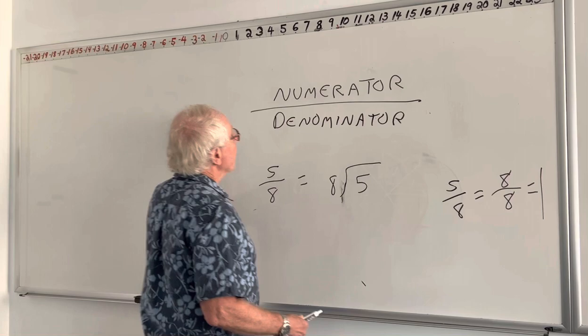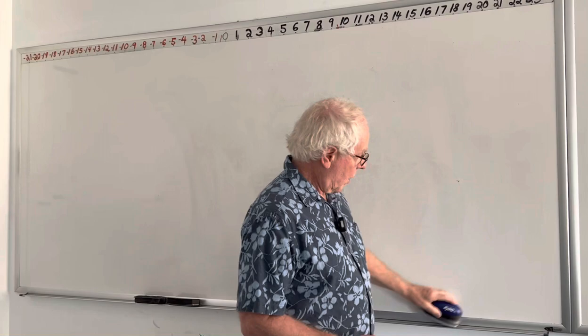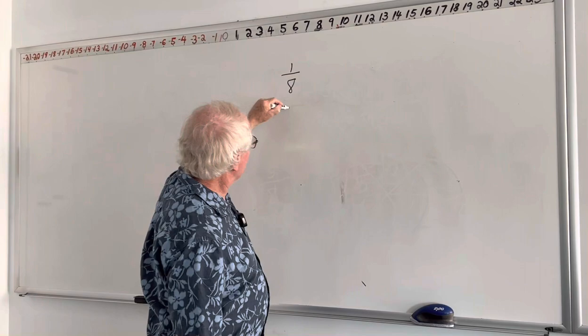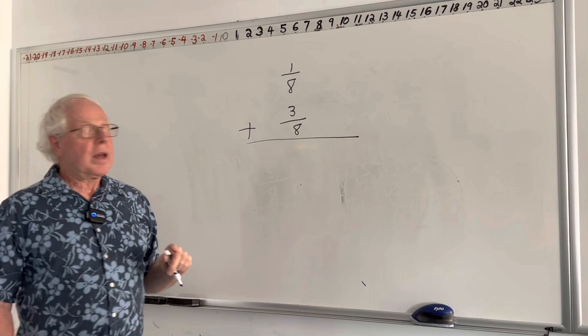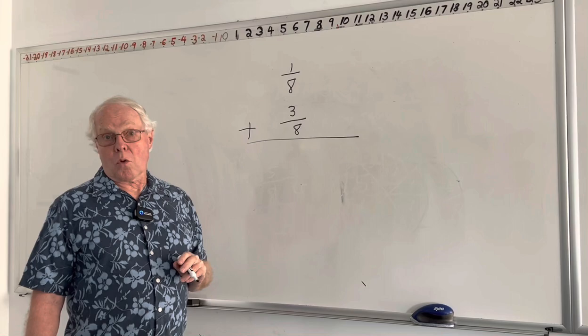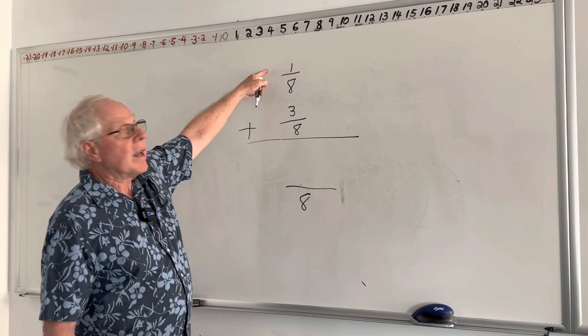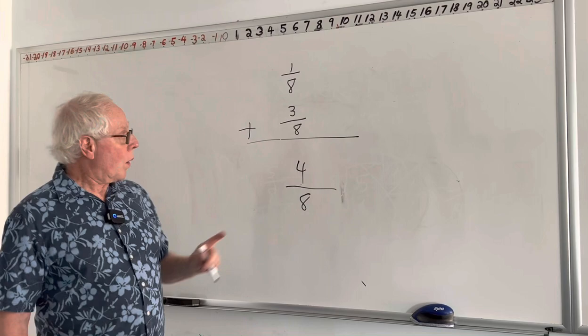Let's do some problems. We have 1 eighth plus 3 eighths. From our pizza example, if you had one slice and then three more slices, it's going to be a total of 4 slices. Both of these numbers are eighths, so we know this problem is about eighths. We're just going to find out how many eighths: 1 eighth plus 3 eighths gives us a total of 4 eighths.